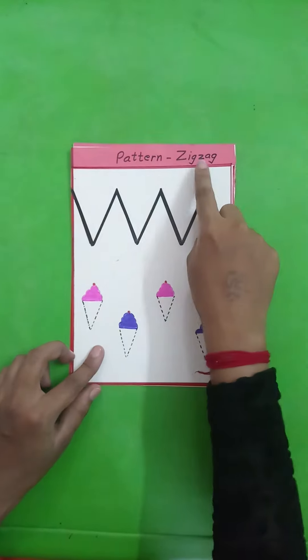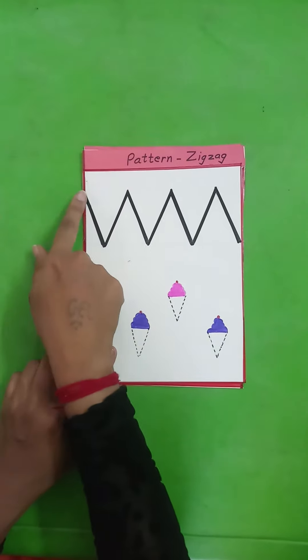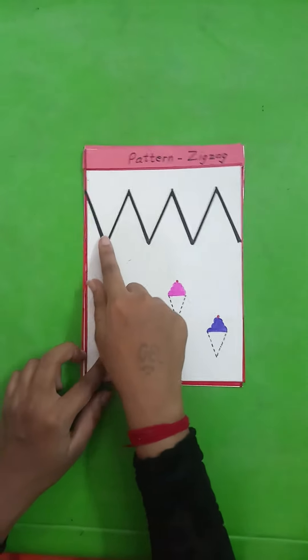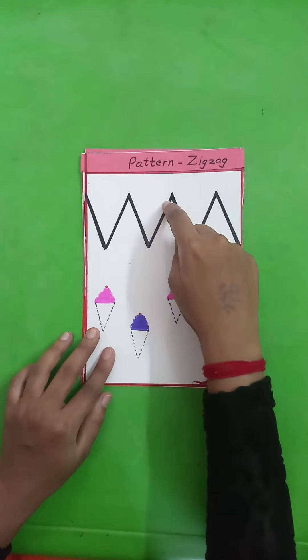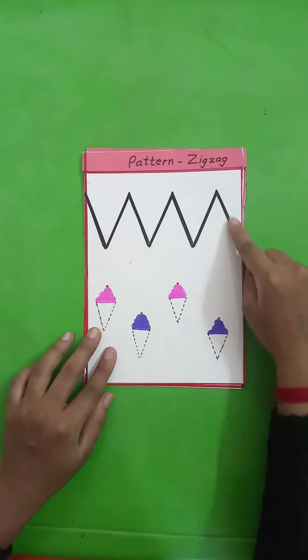Pattern zigzag. We have to start from the top, then go down, up, down. Again go up and then down. Go up and then down.